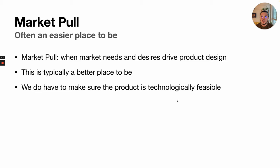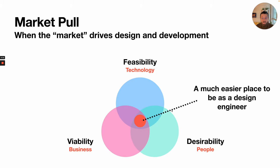There is a better place to be. The alternative to technology push is called market pull. The idea is that clear market needs and desires drive product design. This is why we spend so much time in problem formulation in your design project, and why it's iterative throughout the process — we need to think about whether our product is aligned with the needs and desires of the market. When market is driving design development, really talking about people's desirability for a product and its business viability, it's a much easier place to be as a designer. We spend less time designing products that won't get adopted and will have no impact.